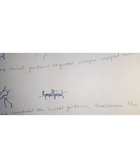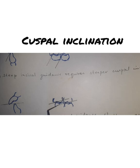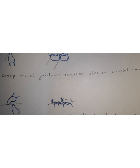The steeper the incisal guidance, the steeper will be the cuspal inclines. Likewise, more horizontal incisal guidance results in shallower cuspal inclines. Cuspal inclination is the angle formed by the inclination of the mesio-buccal cusp of the lower first molar with the horizontal plane. Non-anatomic teeth are used when it is difficult to record jaw relations — for example, with highly resorbed or flat ridges, or in cases where a monocentric occlusion is given.